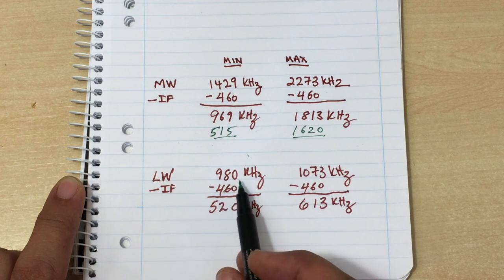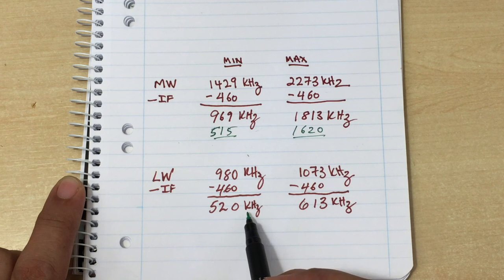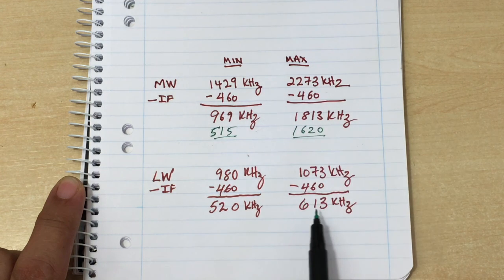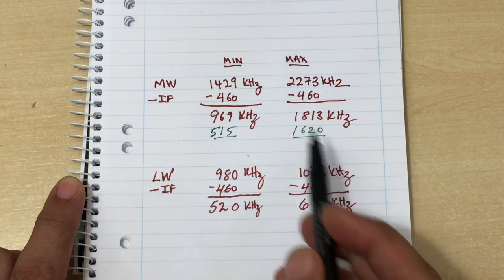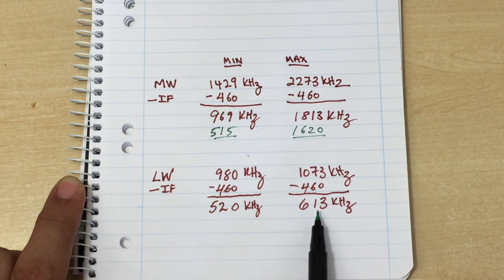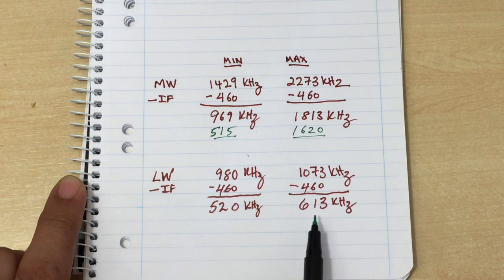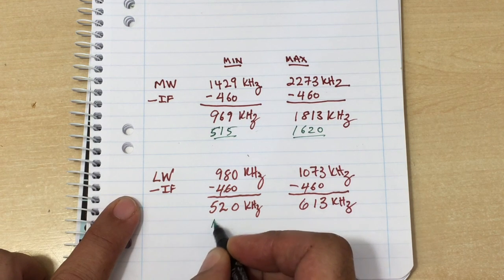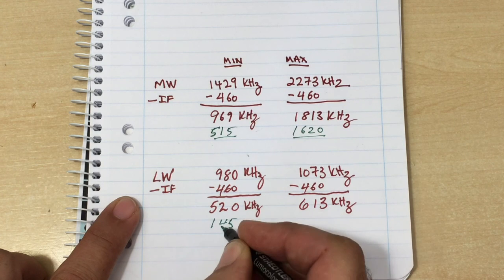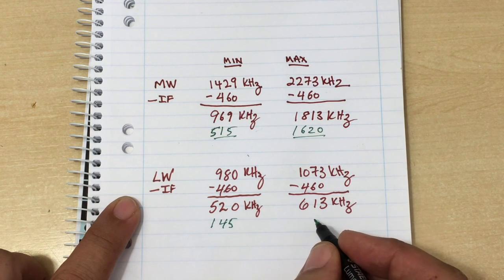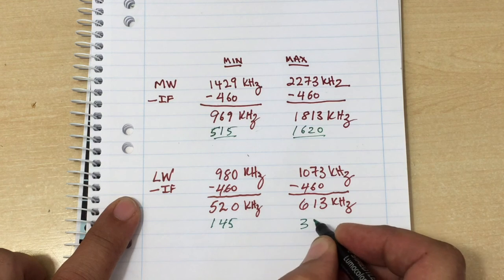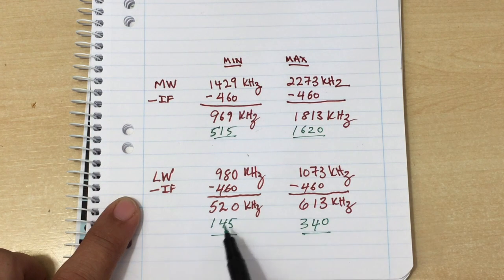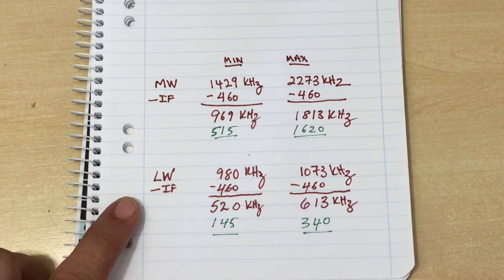The same occurs here. The minimum frequency I can tune to is 520. Now that's already in the medium wave band. And the maximum is 613, which is well within the medium wave band. So again I've got the same problem because what I should be tuning for is 145 or so to about 340. Those are the frequencies that I'm trying to reach. Again, I can never get anything on that band.